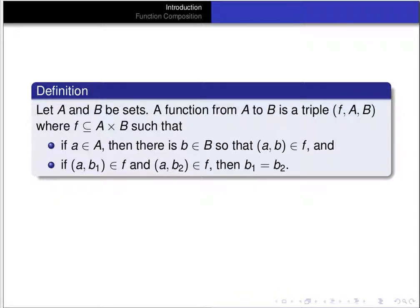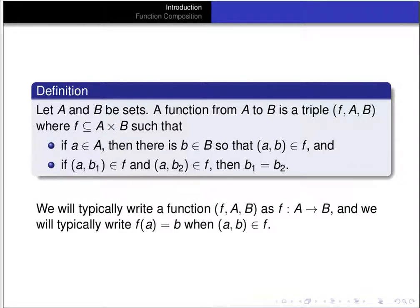The first condition essentially says that for every a in A, there's a b in B so that (a, b) is in f. The second condition is what's commonly known as the vertical line test — for every input, there's a unique output. We'll typically write a function as f: A → B, and read it as a function f from A to B. And we'll write f(a) = b when the pair (a, b) is an element of f.